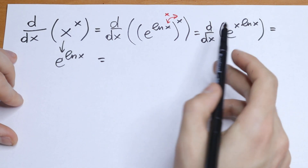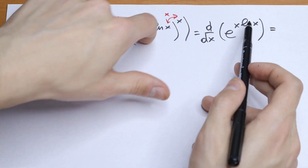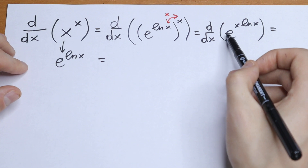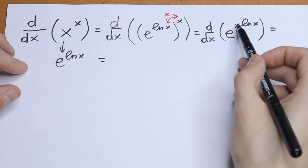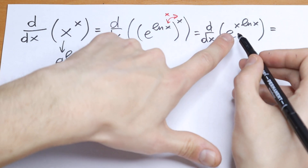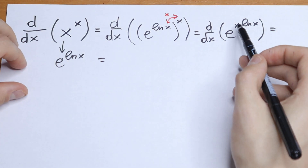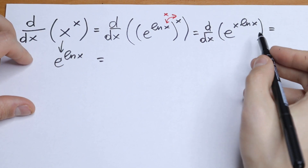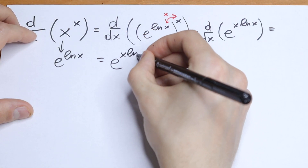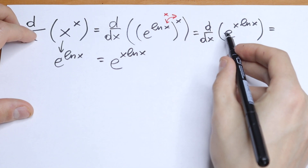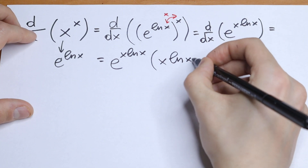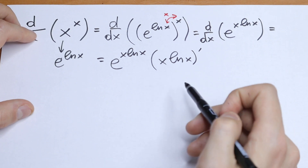We have a situation like e to the power x, but instead of x we have x times natural log x. When finding this derivative, we apply the chain rule: the derivative of e to the power (x·natural log x) is e to the power x·natural log x, multiplied by the derivative of the exponent — so times (x·natural log x) prime.